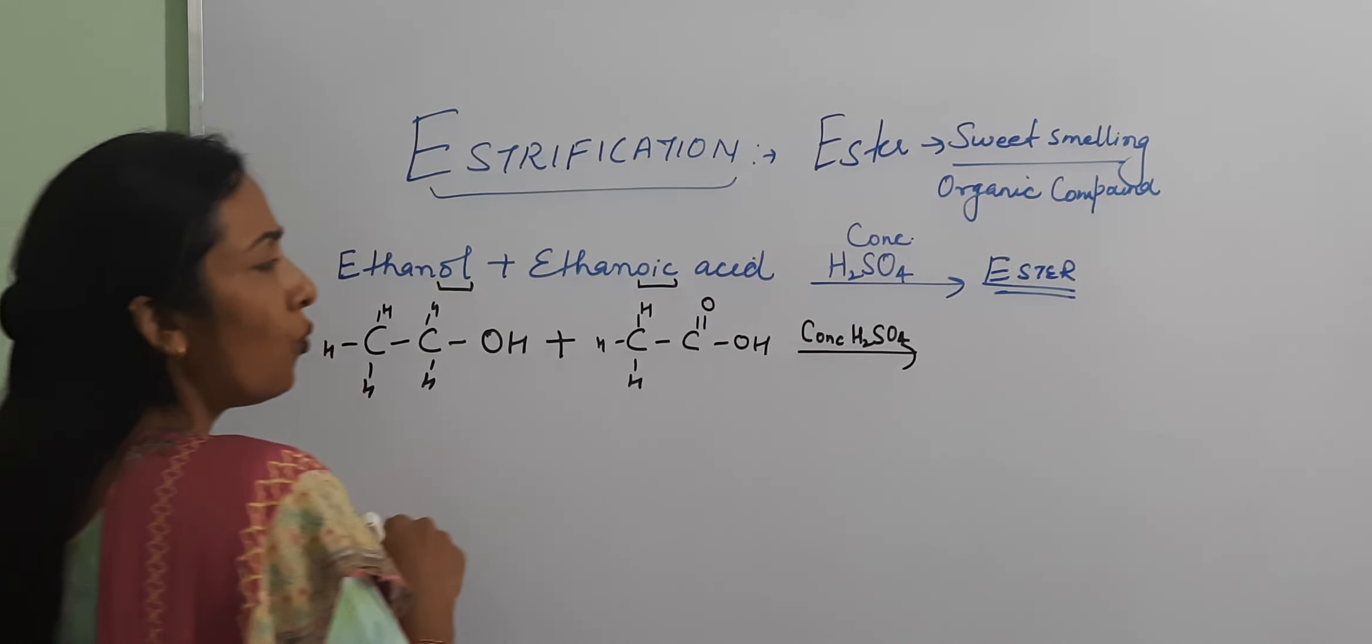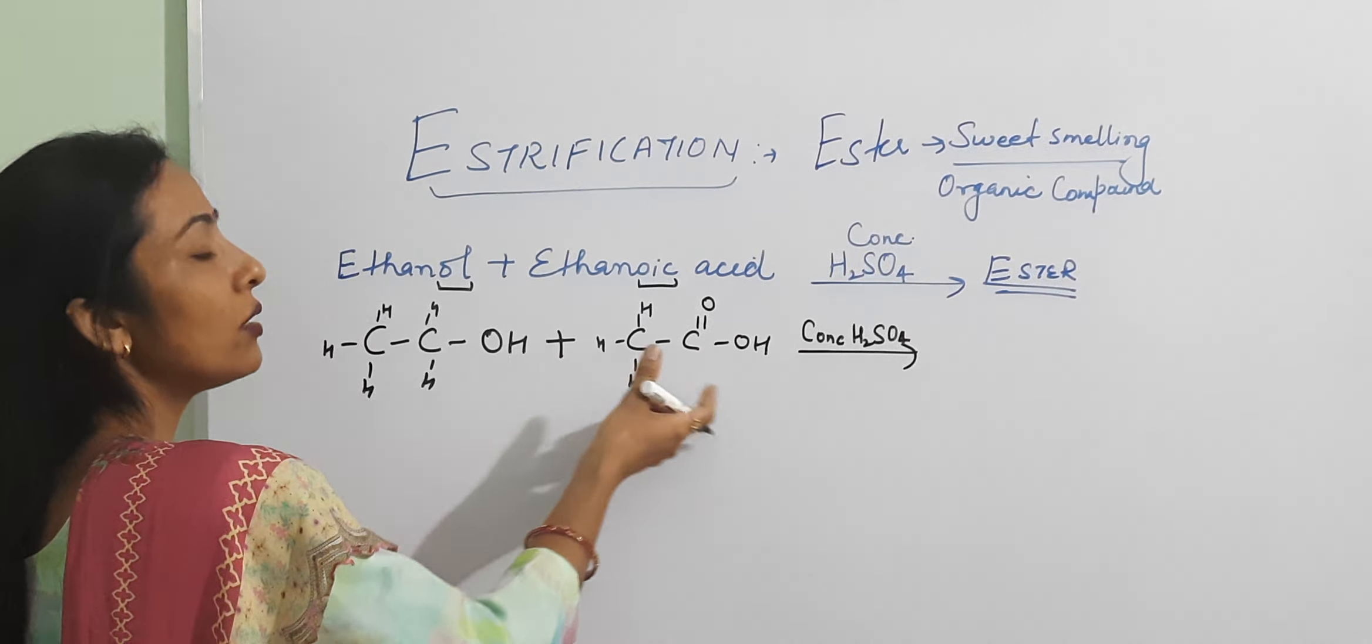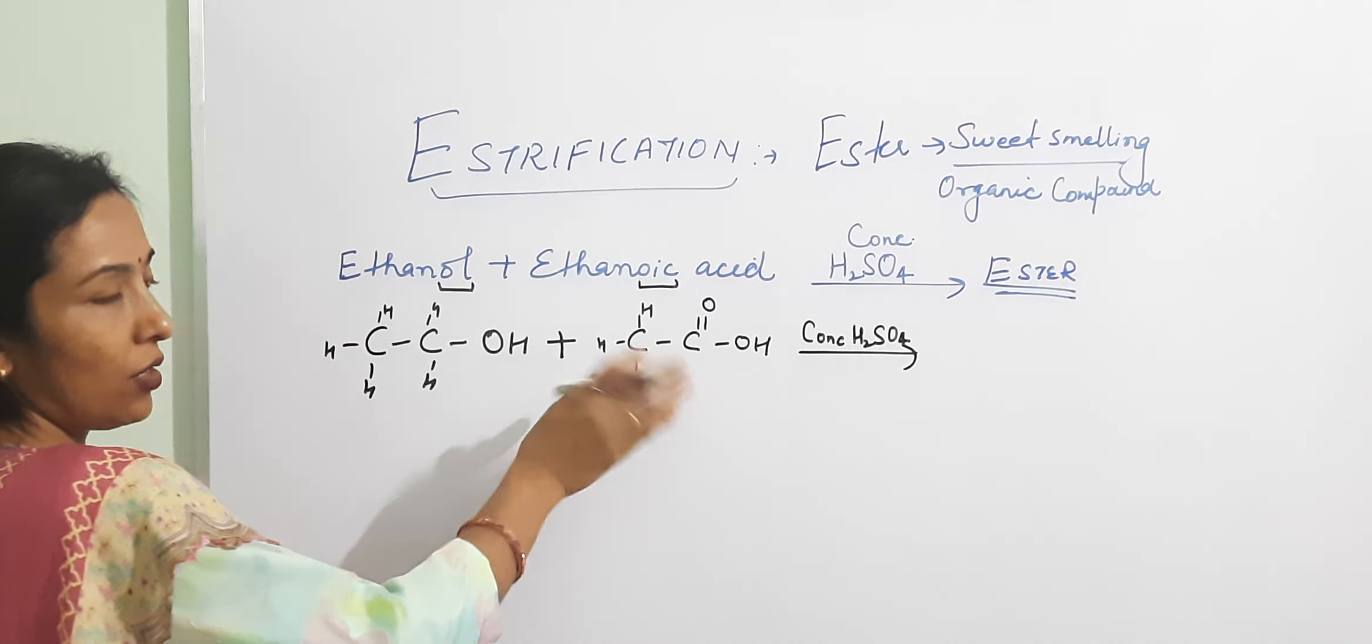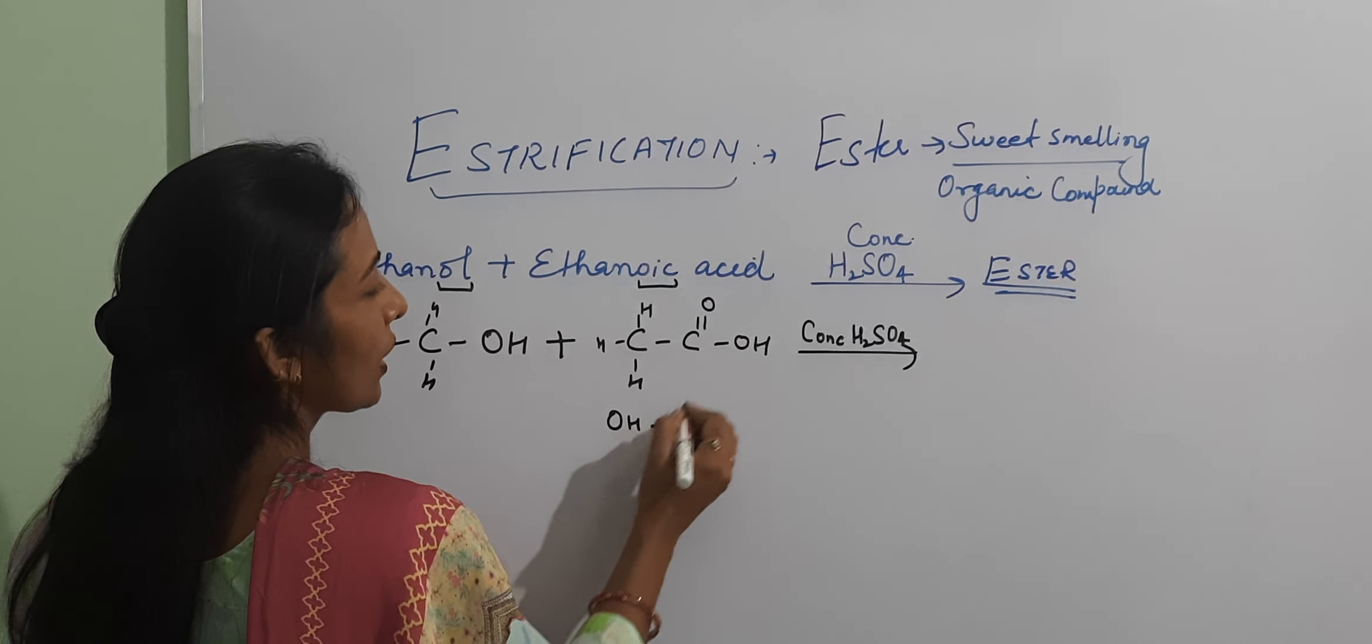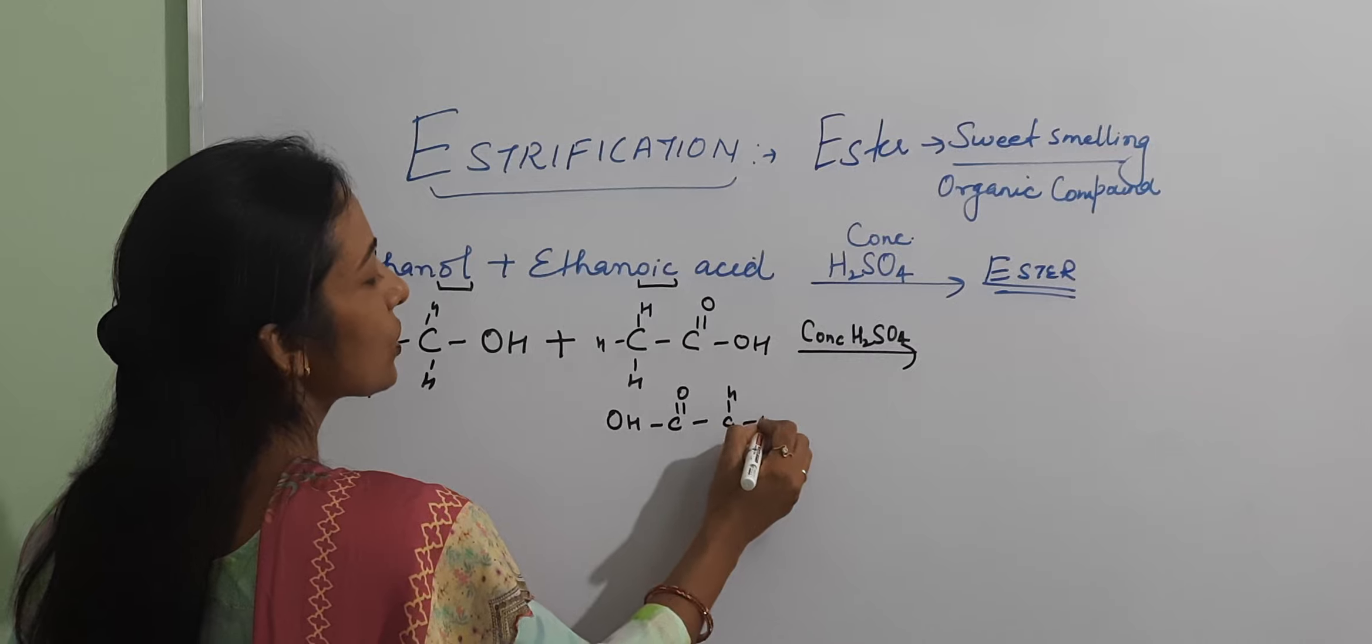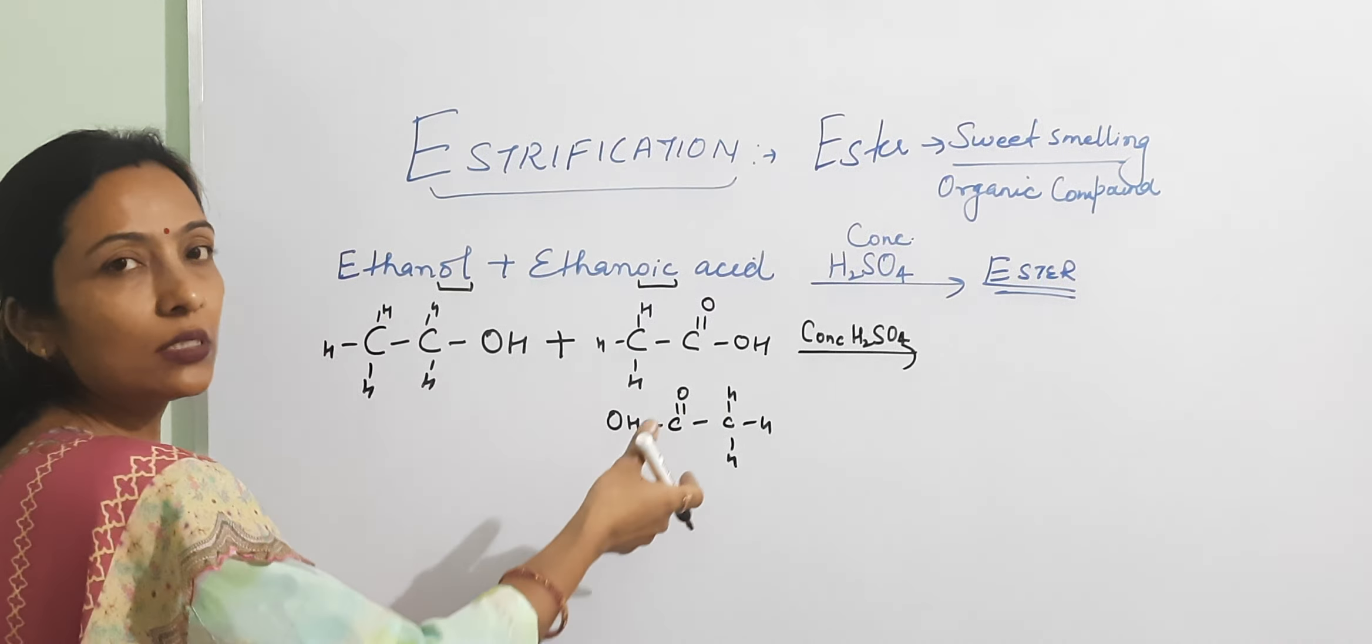Now we have ethanol and ethanoic acid. We write them. If we do this: O, H, then C, O, then C, H, H, and H.